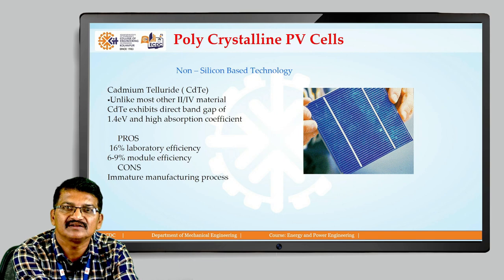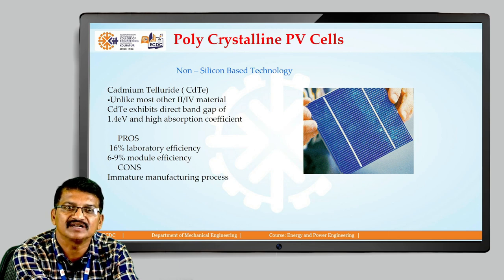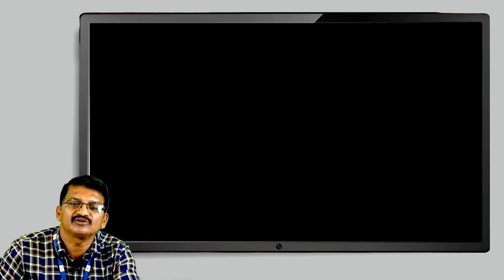Cadmium telluride (CdTe), unlike most other thin-film materials, exhibits a direct band gap of 1.4 eV and high absorption efficiency. Advantages include up to 60% laboratory efficiency and 6 to 9% module efficiency. The disadvantage is an immature manufacturing process. This covers all the PV cell types and how they are working. Thank you.